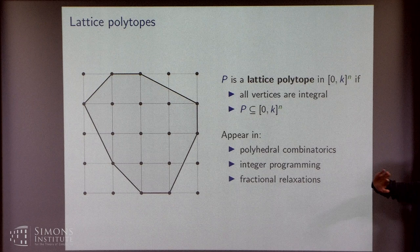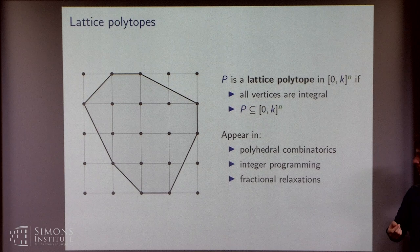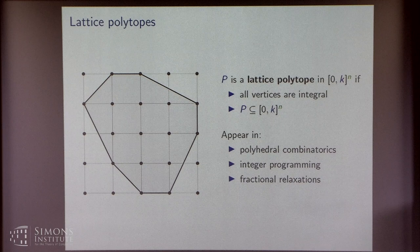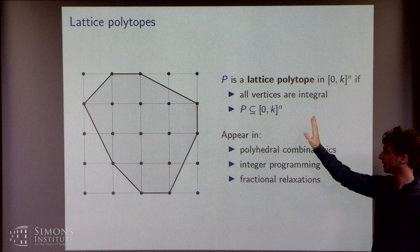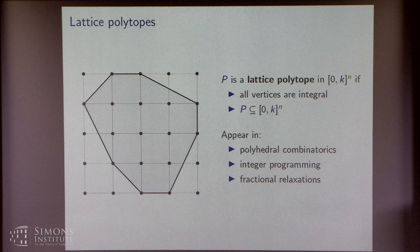Of course, lattice polytopes appear throughout several fields. In polyhedral combinatorics, think about the convex hull of any set of characteristic vectors of the ground set. These are all 0,1 polytopes. In integer programming, the convex hull of the integer points in a rational polyhedron is always a lattice polytope. And also in fractional relaxations of combinatorial optimization problems, we have polytopes which are equivalent. Think about the fractional matching polytope, for example. That's a polytope which is contained in the 0,1 cube, but the vertices are 0, 1/2, 1. So up to scaling, we can transform it to a lattice polytope with k equal to 2.